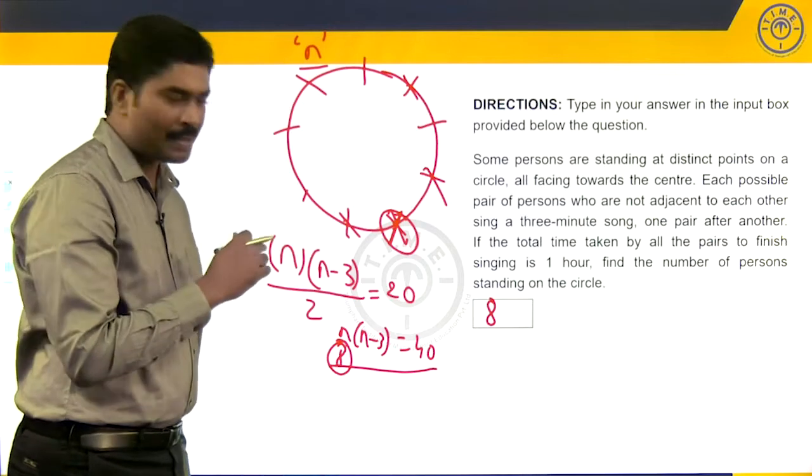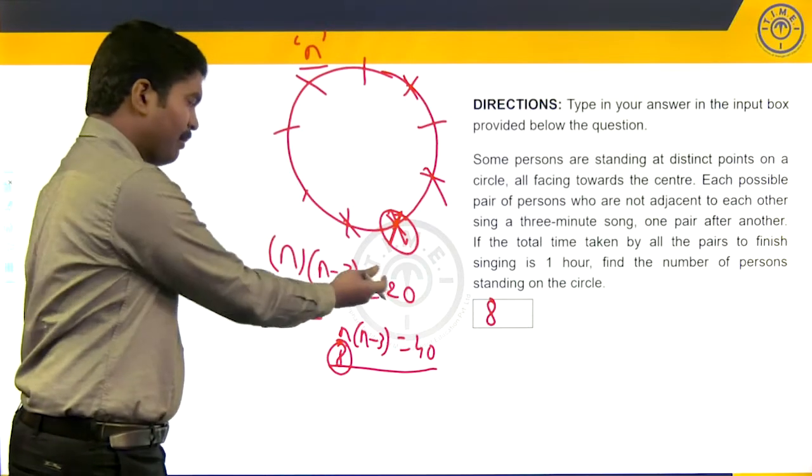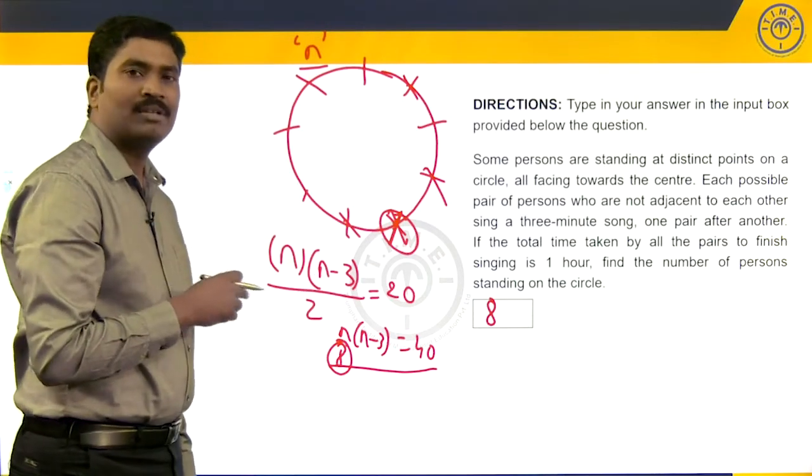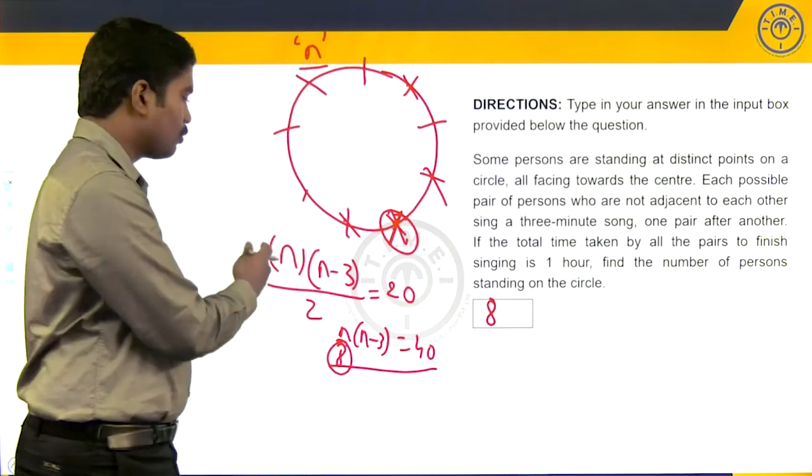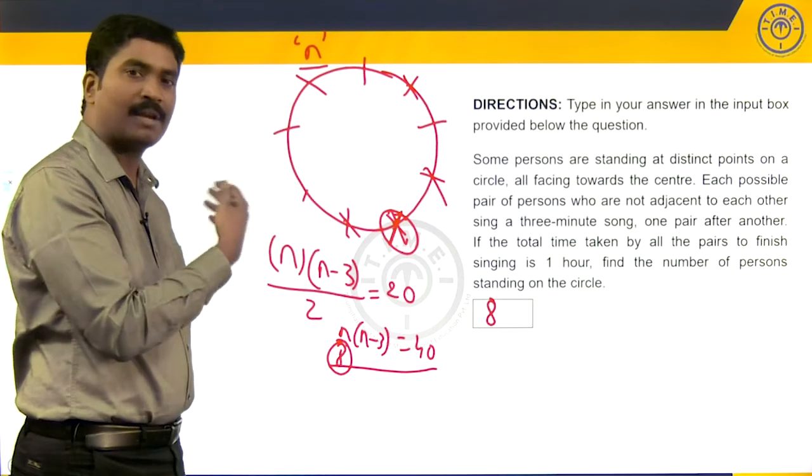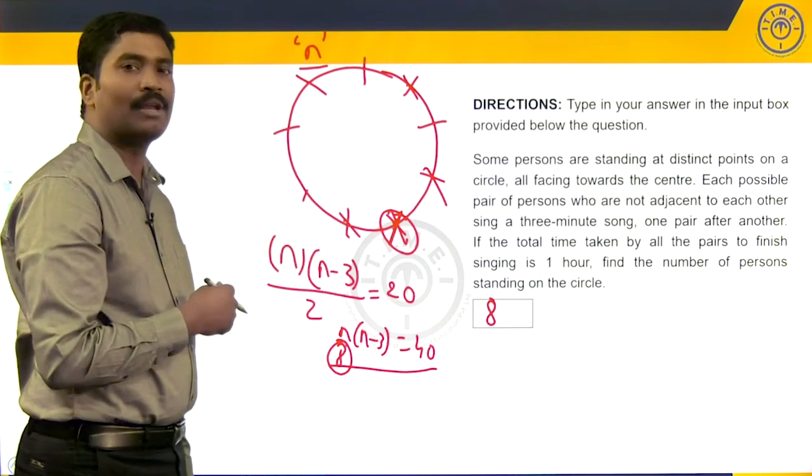Now, it's not just that. If we realize this is nothing but a formula for finding out the different number of diagonals on an n-sided polygon, n into n minus three by two. So, this is an application of number of diagonals in a polygon.